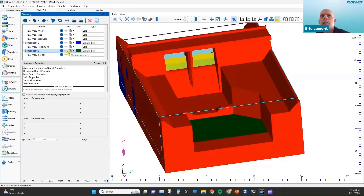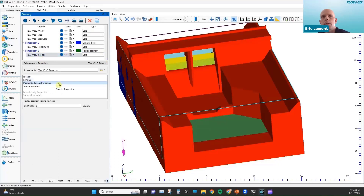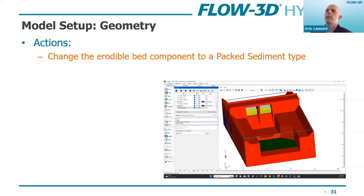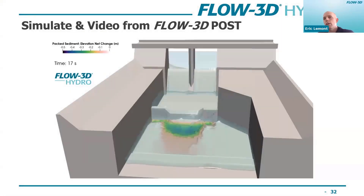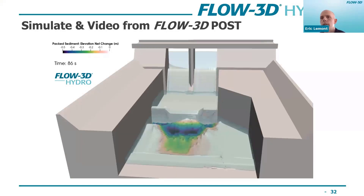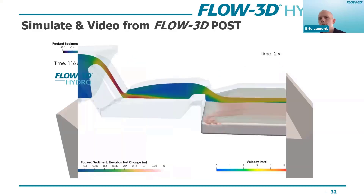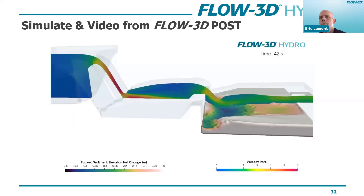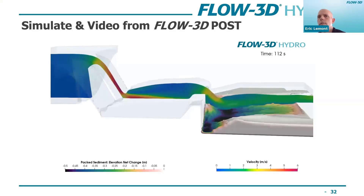Now we'll turn on the packed sediment object in the geometry window. We have this separate object in green. By default it's a solid — we'll change it to packed sediment. When we do that, in the subcomponent properties the packed sediment properties appear. Because we have just one sediment species, only one shows up, but if you had multiple you could define the distribution of sediments in that object. Once we've done that, all we have to do is run it. You'll see downstream that the erodible area erodes, and on the right there's a little piling up of sediments.